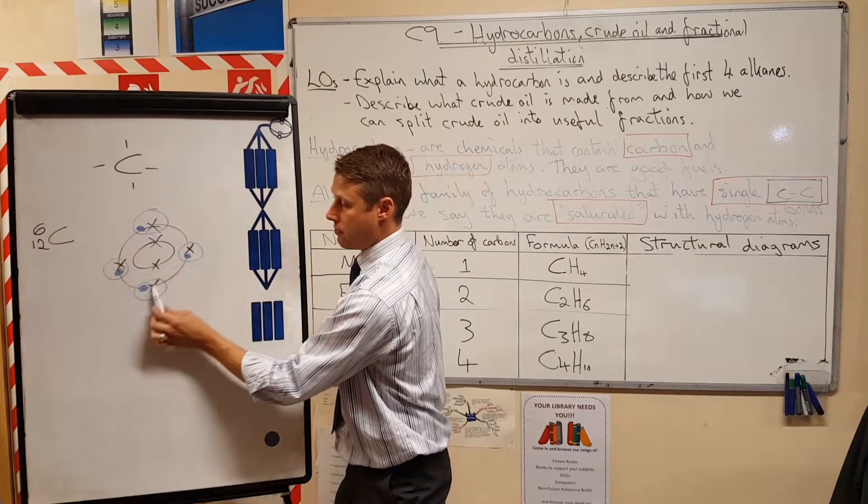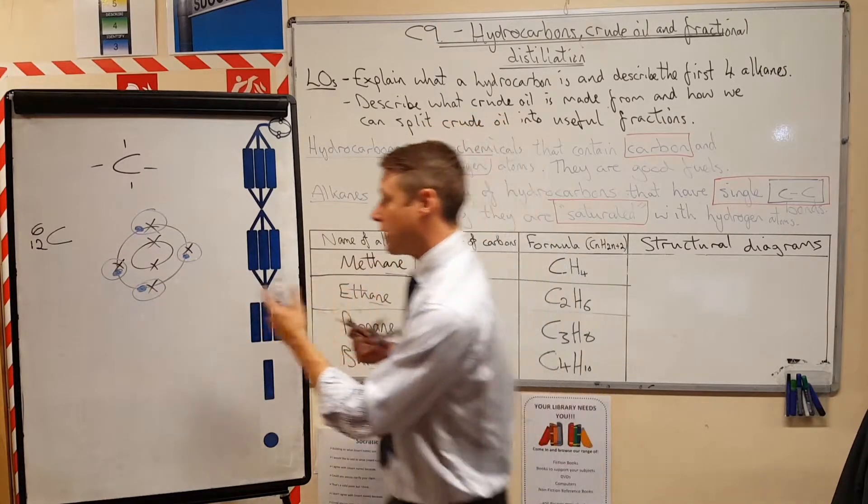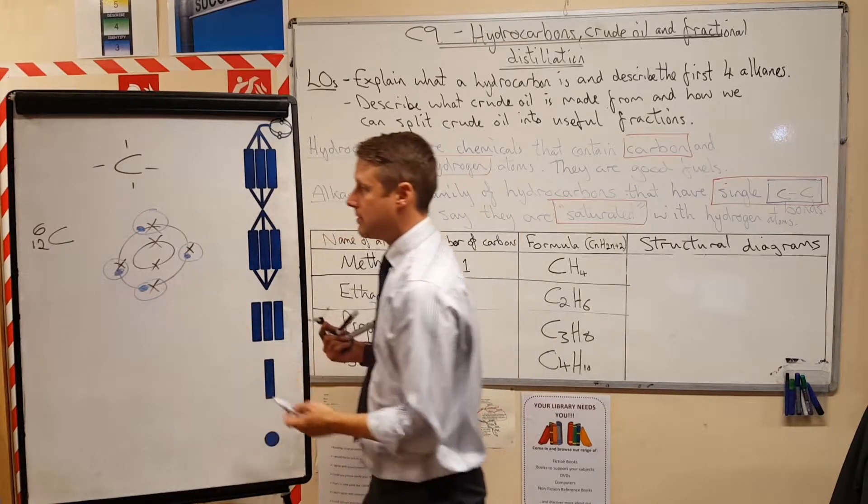So we can just count now: 1, 2, 3, 4, 5, 6, 7, 8. Carbon's now happy, it's got a full outer shell. Each one of these hydrogens has only got one electron shell anyway, so that's happy too.